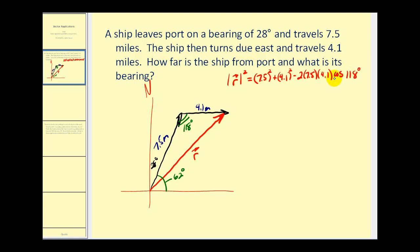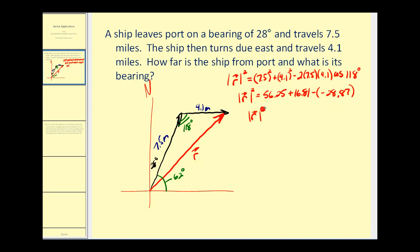For the sake of time, I've already calculated these values — you may want to check these for yourself. Notice here we're subtracting a negative, so we end up adding 28.87. So the square of the magnitude of r is equal to 101.93. Now we can square root both sides of the equation, so the magnitude of vector r is approximately equal to 10.1.